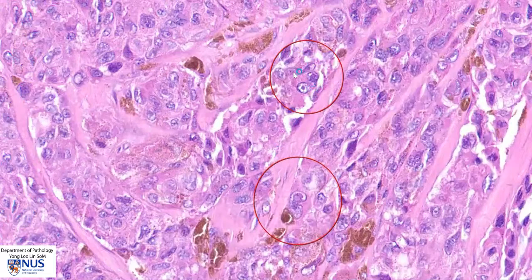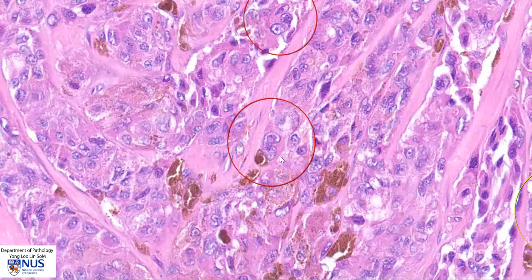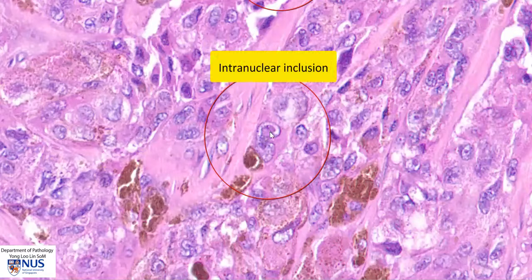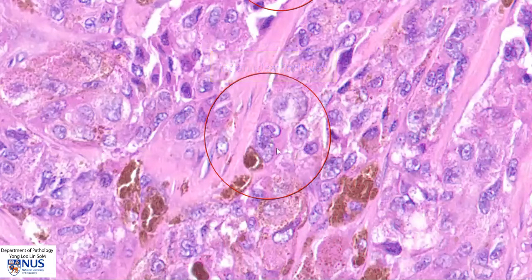Here is another example of a multi-nucleated tumor cell. And over here there is another feature commonly seen in melanomas: the presence of an intranuclear inclusion, which appears as a little island of cytoplasm within the nucleus. Intranuclear inclusions are quite frequently seen in melanoma.